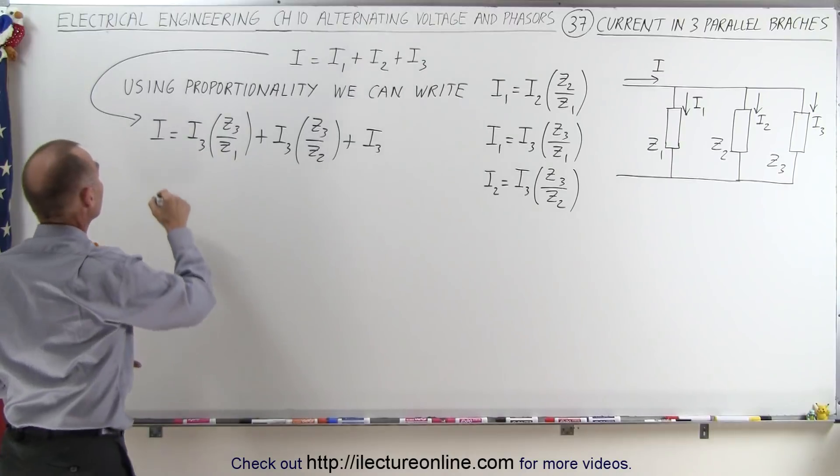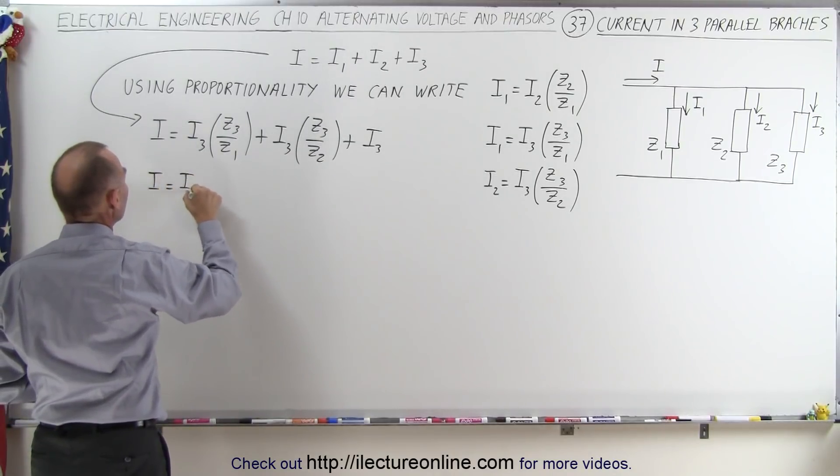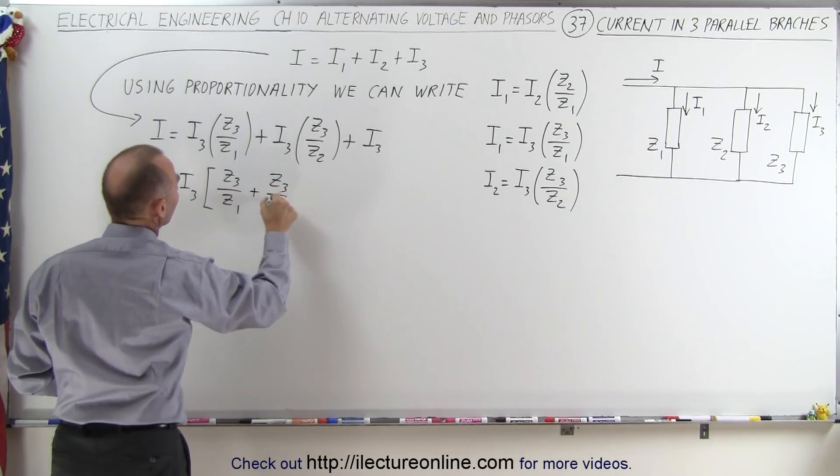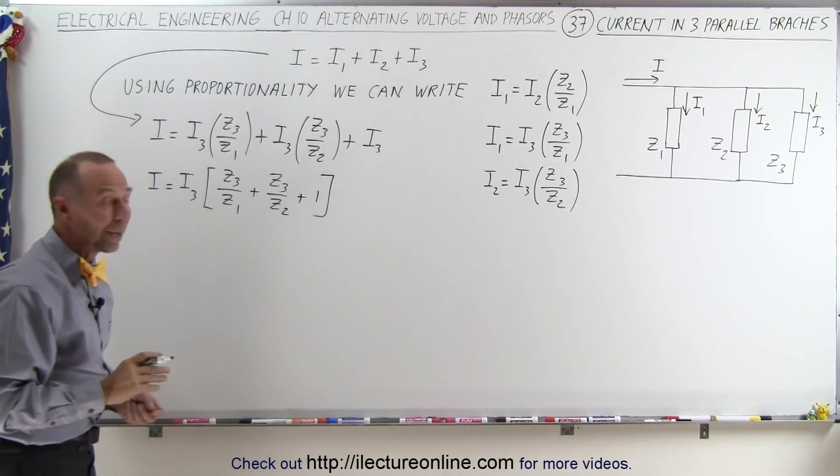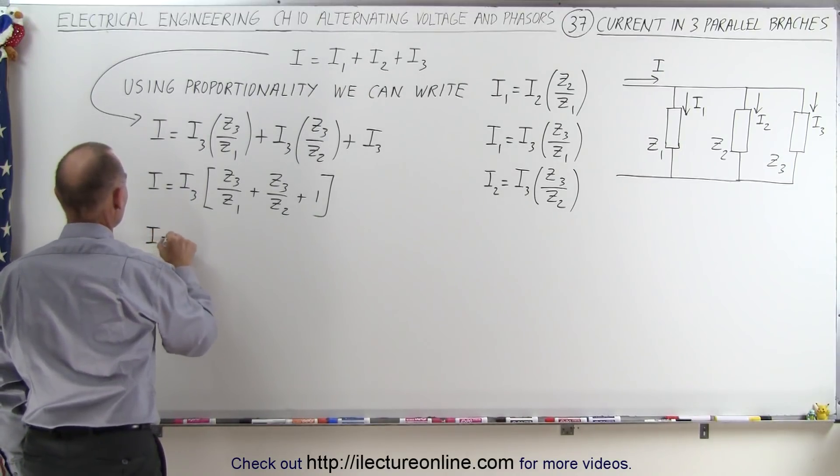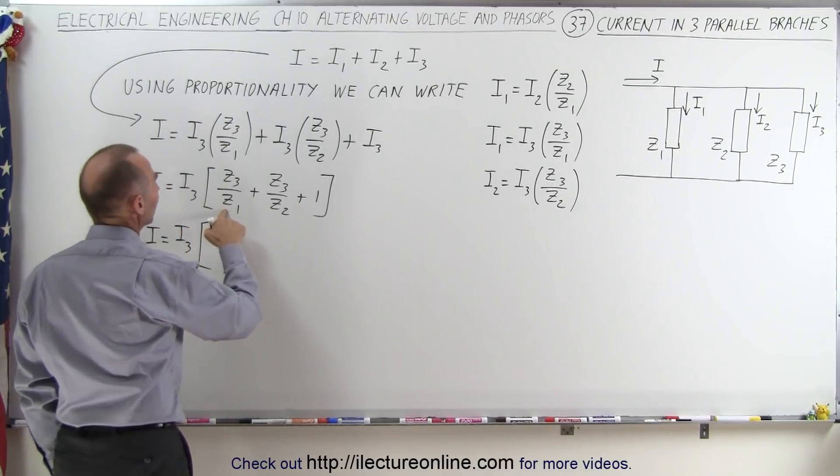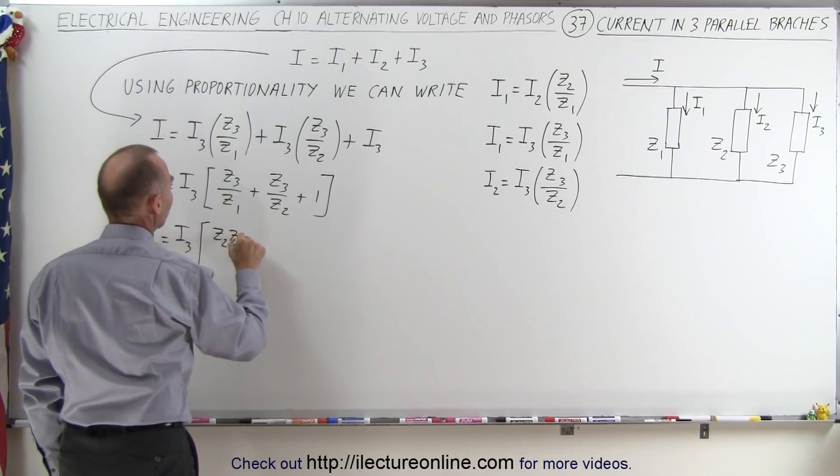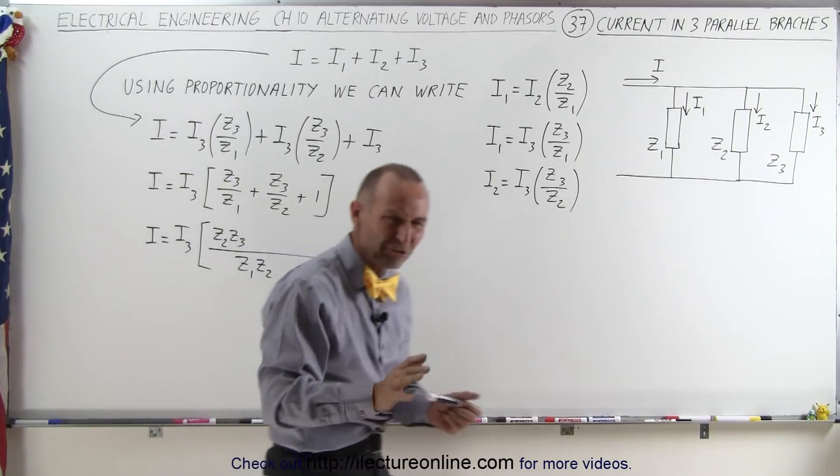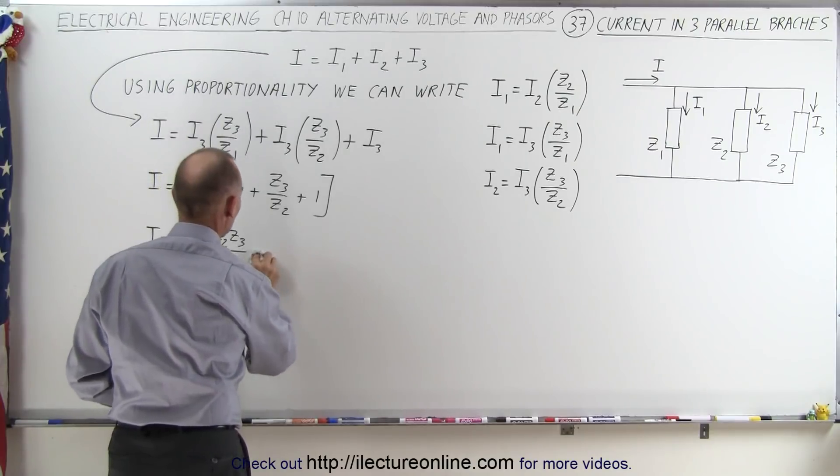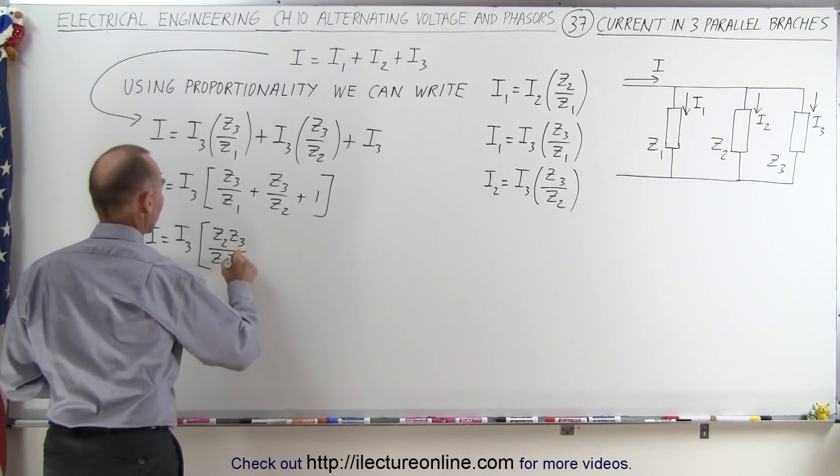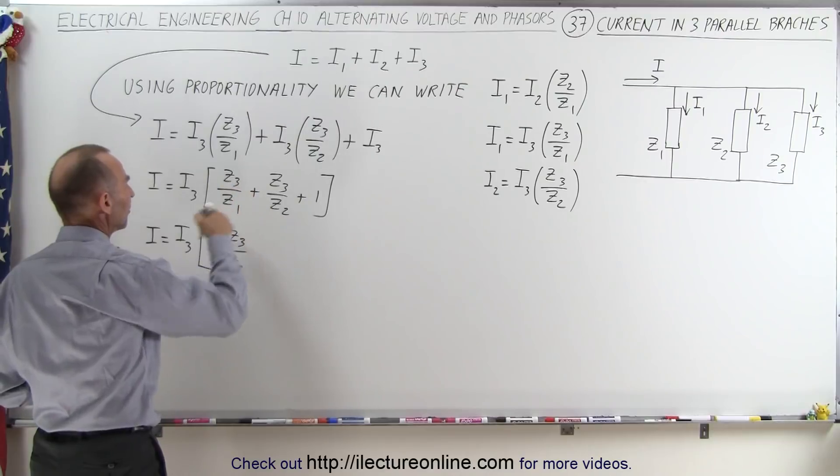Now I can factor out an I3, so I can say that I is equal to I3 times, and what we have left is Z3 over Z1 plus Z3 over Z2 plus 1. And now I'm going to write all that over a common denominator, which is Z1 times Z2. So I can write that I is equal to I3 times, here I'm missing a Z2, so that becomes Z2 times Z3 over Z1 times Z2. Just to make it easier so you can see what I'm doing, I'll write three different fractions. Notice when I cancel the Z2s out, I end up with Z3 divided by Z1.